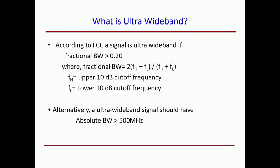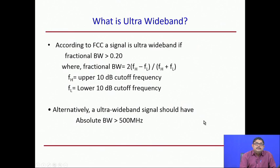We start with the definition of ultra wideband. There is actually a lot of debate over this, and IEEE has not yet come up with a proper definition. However, the FCC — Federal Communication Commission — has already come up with a scientific definition of ultra wideband. According to that definition, a signal is called ultra wideband if the fractional bandwidth is greater than 20 percent.